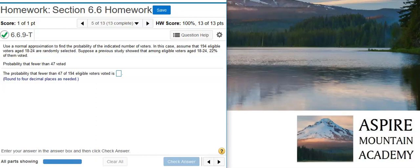Today, we're going to learn how to find the probability of voters voting with a normal approximation of the binomial. Here's our problem statement.